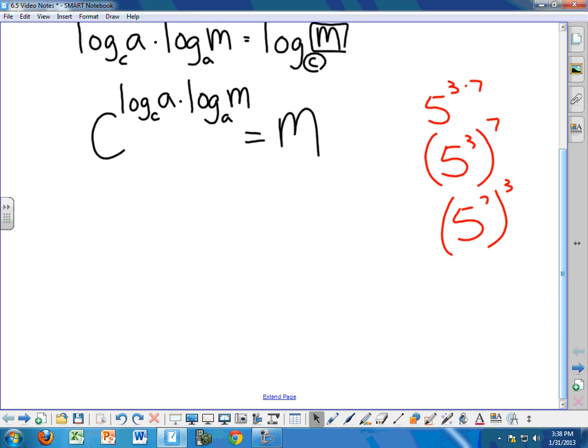So knowing that, I'm simply going to slap a parentheses around C to the log base C A. And that will now go to the log base A M power, by simply separating that multiplication into a parentheses.